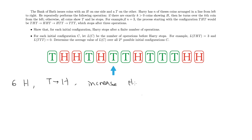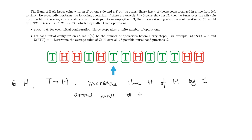So the next move is to turn over the coin at the 7th position, which is the coin at the right-hand side. Now if we think there is an arrow indicating the current position, then the arrow is going to move to the right-hand side if the current position is occupied by a tail.